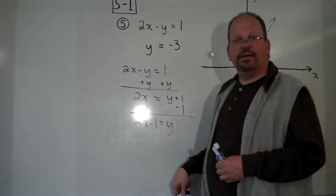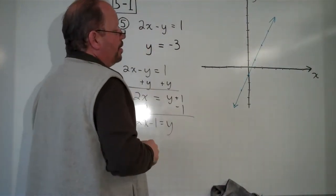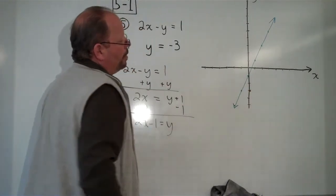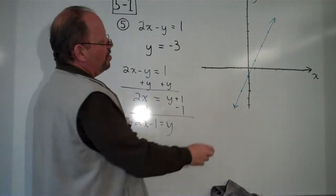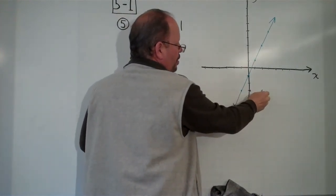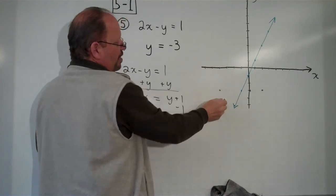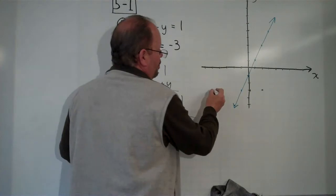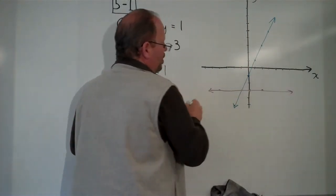And then our other line, y equals negative 3. Well, here's on y, here's negative 3. And if x is 2, y is equal to negative 3. If x is 10, y is equal to negative 3. If x is negative 4, y is equal to negative 3. That's a special kind of a line. It's right there.